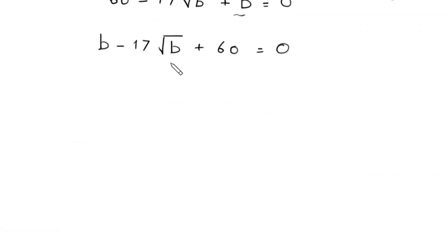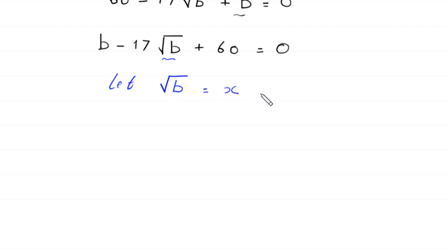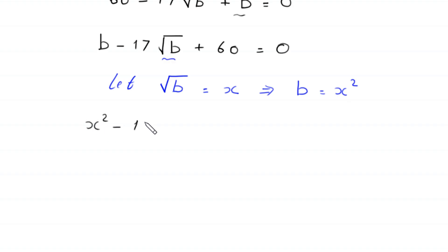We suppose that root b is equal to x. If we square both sides, this implies b equals x squared. So the equation becomes x squared minus 17x plus 60 is equal to 0. This is a quadratic equation and it is factorable.